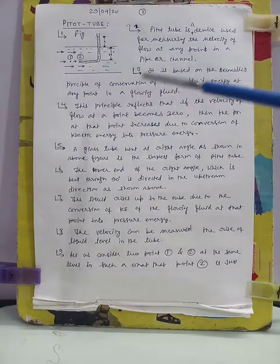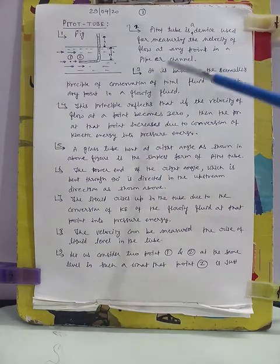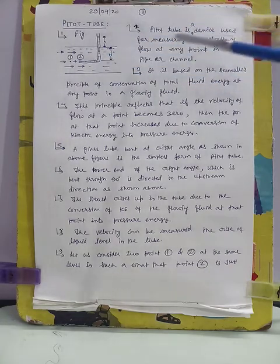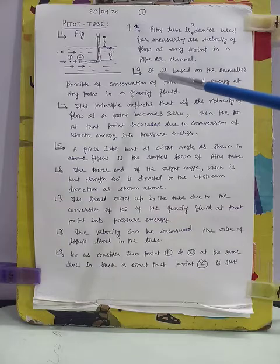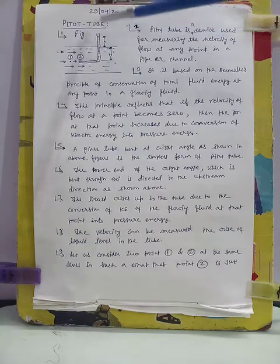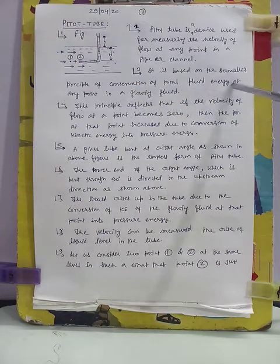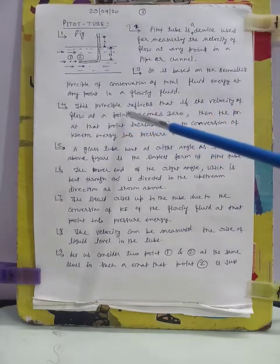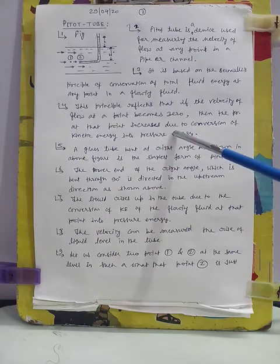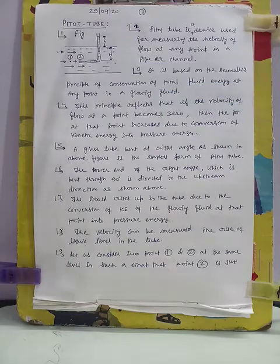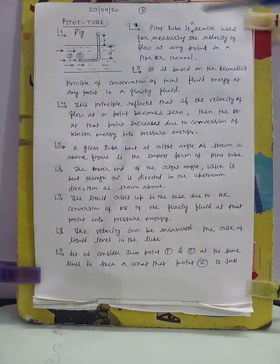The Pitot tube is a device used for measuring the velocity of flow at any point in a pipe or channel. We can use it in both a pipe and an open channel. It is based on Bernoulli's principle of conservation of total fluid energy at any point in a flowing fluid. This principle states that if the velocity of flow at a point becomes zero, then the pressure at that point increases due to conversion of kinetic energy into pressure energy. A glass tube bent at a right angle, as shown in the figure, is the simplest form of the Pitot tube.